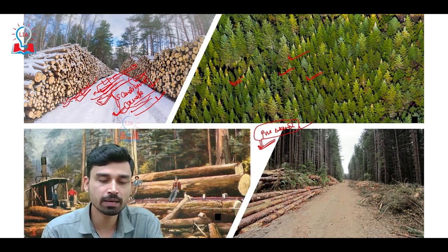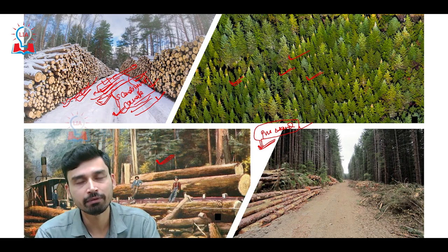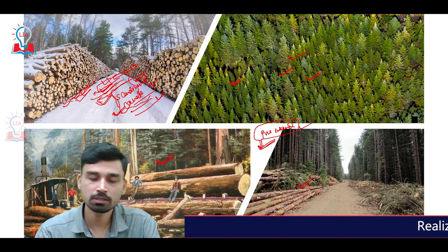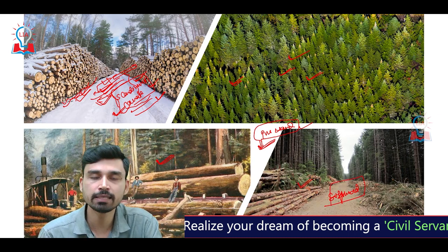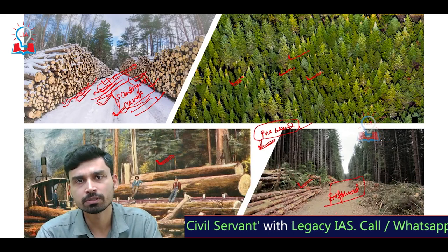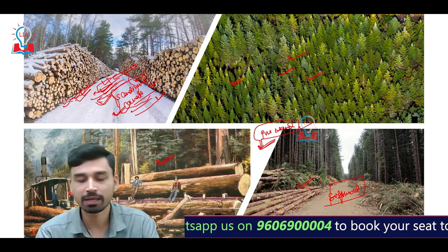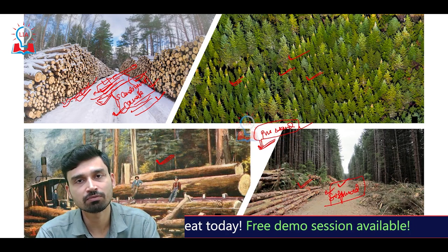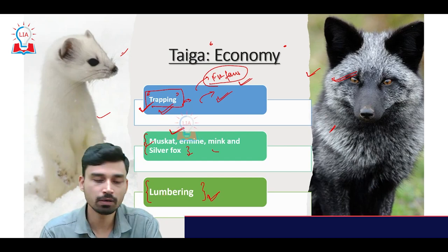Labor supply for lumbering is also abundant because in winter people cannot engage in agricultural activity and thus provide free labor for lumbering. Additionally, coniferous trees are softwood trees, and softwood is in very high demand for industrial purposes such as the paper and pulp industry, the matchmaking industry, and as fuel. Due to these reasons, lumbering is a major economic activity of the Taiga region.